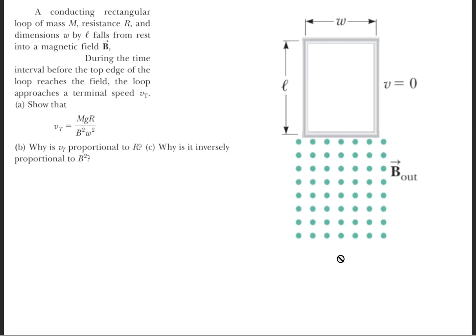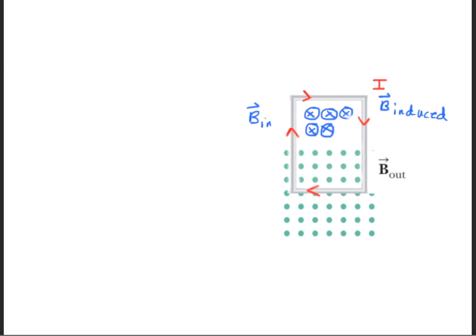We'll begin this question by doing an illustration showing what happens as this loop of wire is falling into the magnetic field. We have the magnetic field here, and as the loop of wire slowly goes down into the magnetic field, there's going to be an induced EMF because the flux going into this loop is increasing — starting from no flux into some flux, meaning there is a change in flux. When there's a change in flux, there's going to be an induced EMF, an induced current, as well as an induced magnetic field. All of this happens to counteract the change in flux.